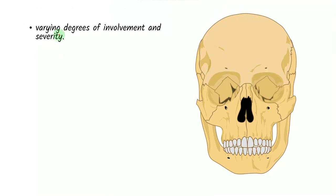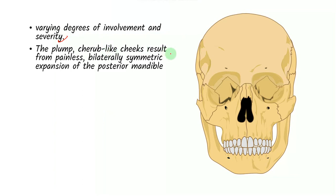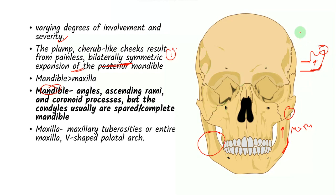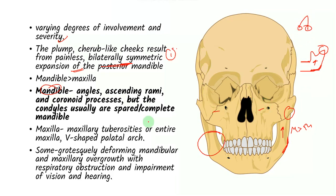Now there are varying degrees of involvement and severity of course. And the first and primary symptom is bilateral symmetric expansion of the jaws, particularly the mandible, mandible greater than maxilla. In the mandible, the most common sites of involvement are the angle, then the ascending ramus, and usually the condyles are spared. So I hope you're understanding. This is the angle of ascending ramus and the condyles are usually spared. In the maxilla, we would see involvement in the maxillary tuberosity and sometimes it would lead to an inverted V-shaped palatal arch. Some deformities are so grotesque that they can lead to respiratory obstruction as well as impairment in vision and hearing. So the first symptom that you've seen is painless bilateral symmetric expansion of the jaws.